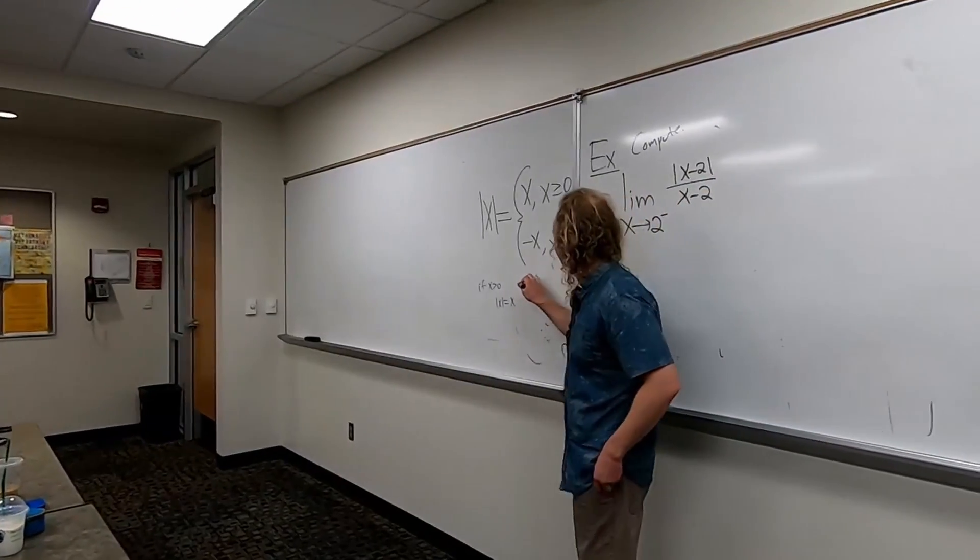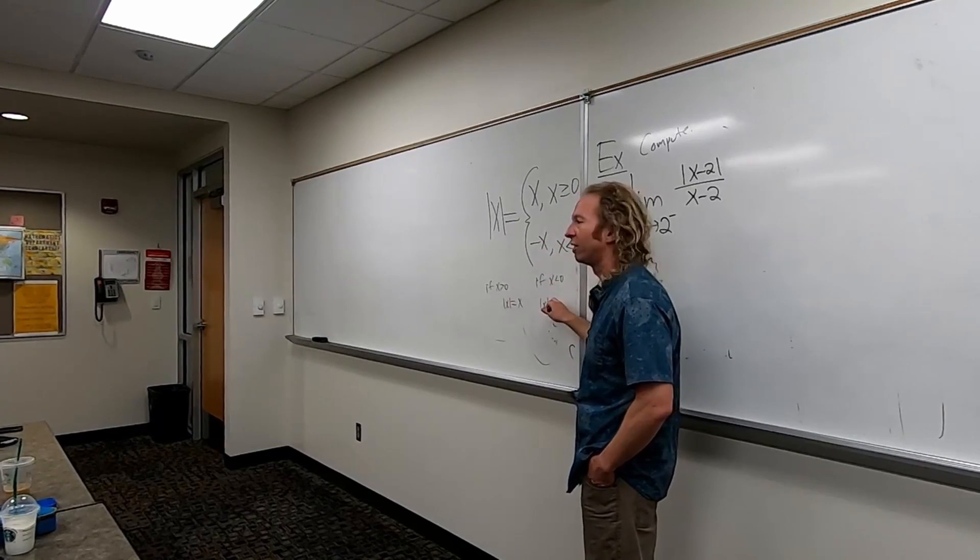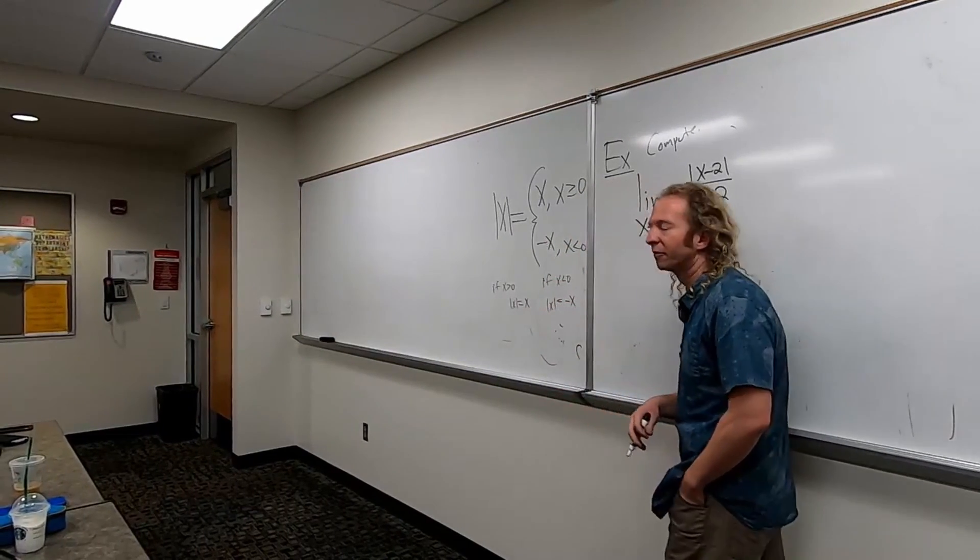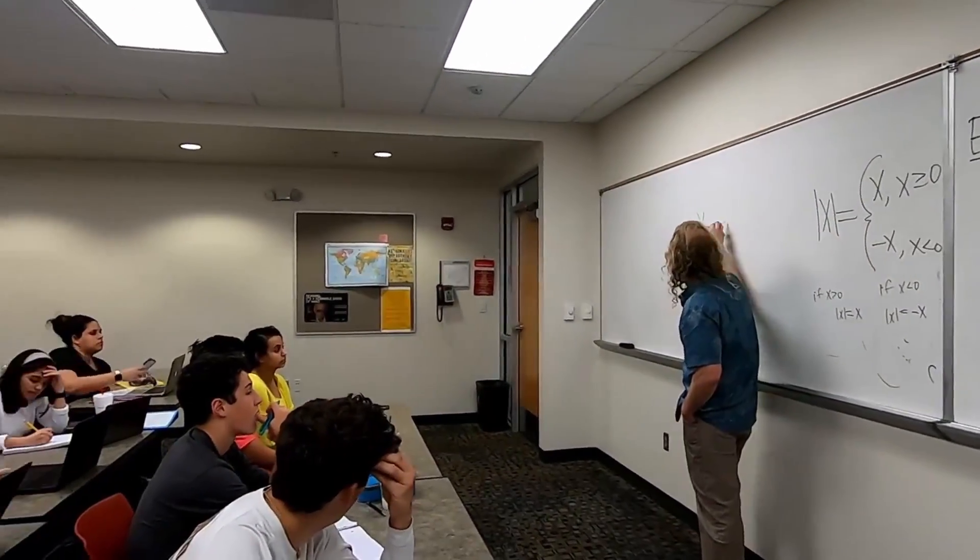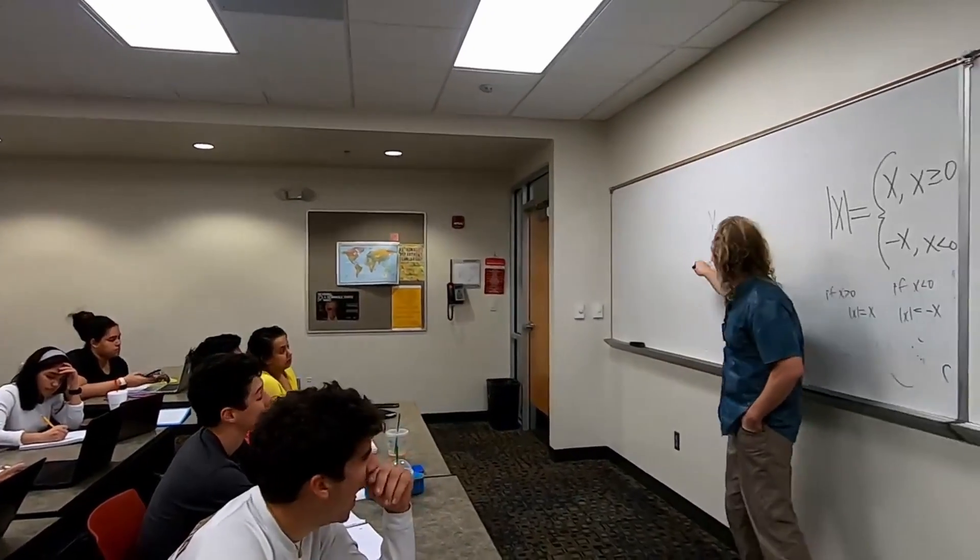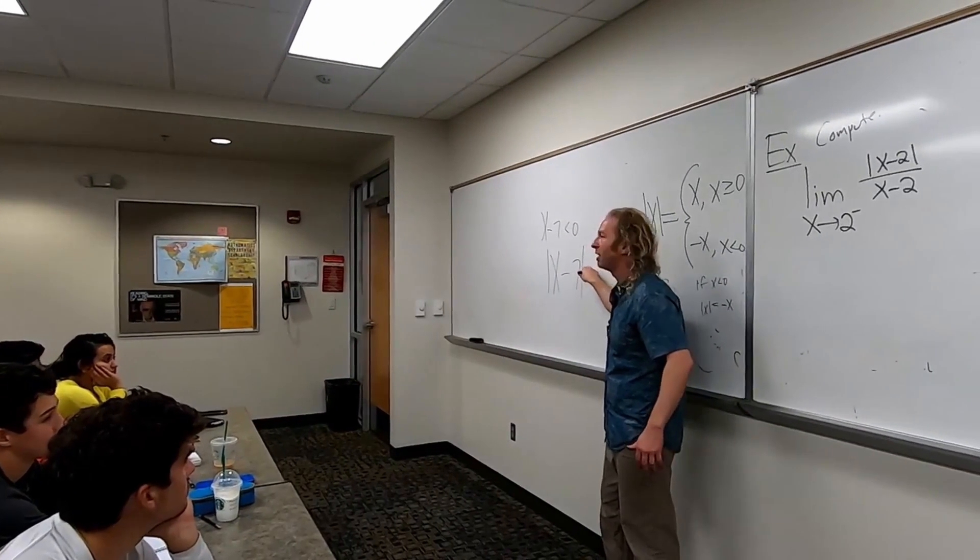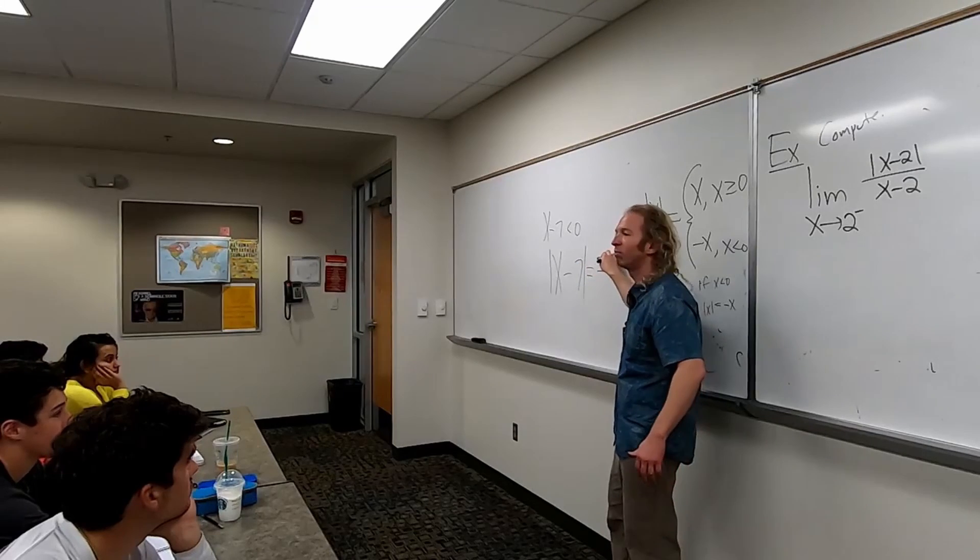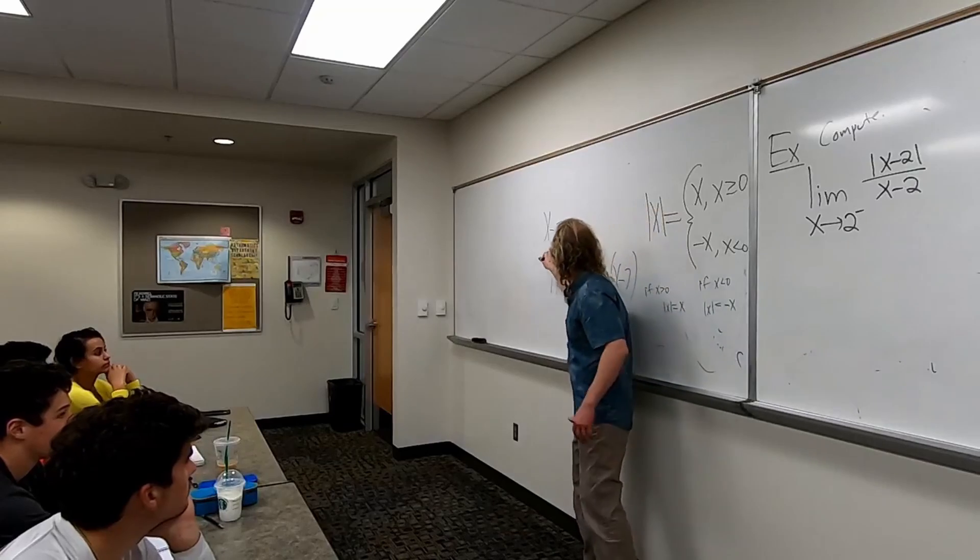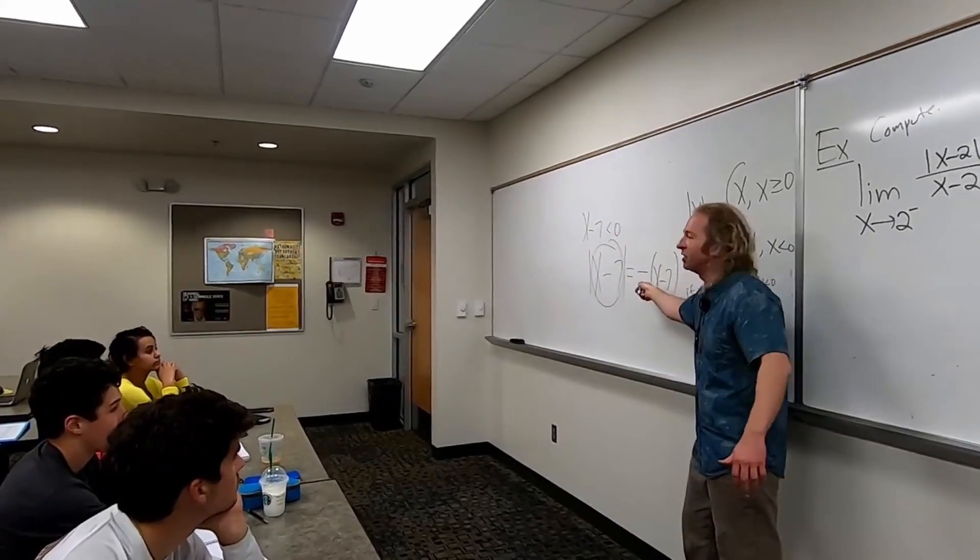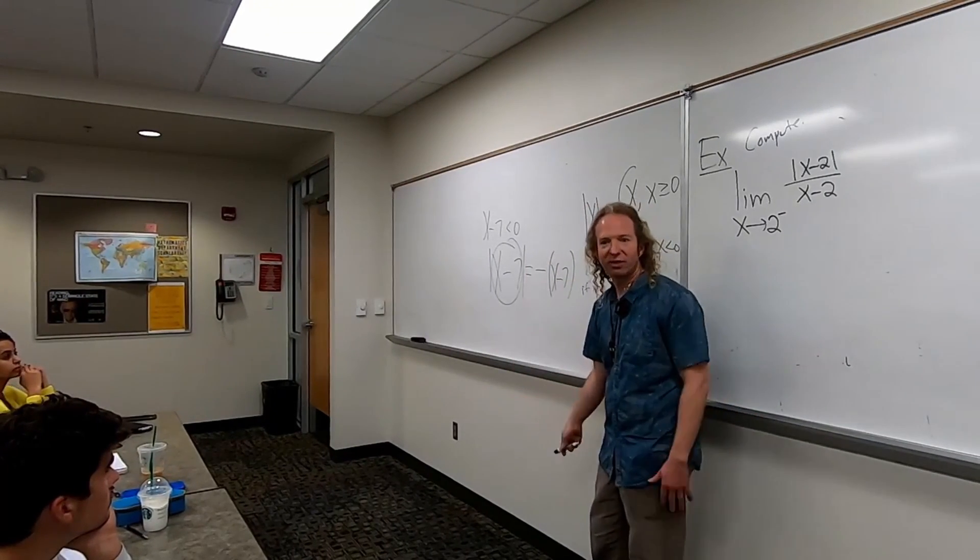If x is negative, the absolute value of x would be equal to, what would it be if you used this definition? Negative x, right? So, just for fun, let's say you know x minus 7 is negative. Let's say you know that. Then you take the absolute value of x minus 7. What would that be here? What goes here? Negative parentheses x minus 7. So if this is negative, when you drop the absolute value, you have to put a negative sign in front of it, okay? If it's positive, you can just drop the absolute value. See how that works?